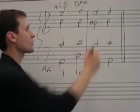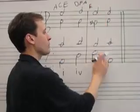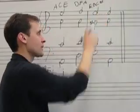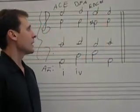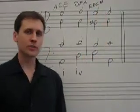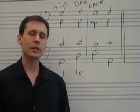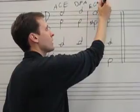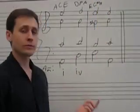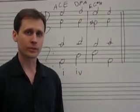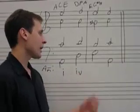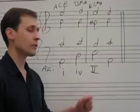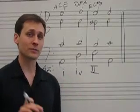Next chord: the lowest note is E, then we've got B, G sharp, and then E on top. E, B, G sharp — a little hard to recognize as a chord, but rearrange the letters: E, G sharp, and B, and you can see that it's an E major chord. In the key of A minor, E major is the dominant. There's an example of that major dominant chord I was emphasizing in the last lesson.